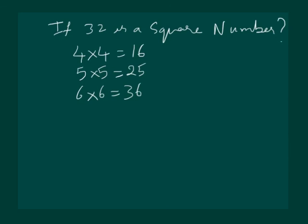Clearly, there is no natural number between 5 and 6, whose multiple with itself will give us 32. So we can say that 32 is not a square number.